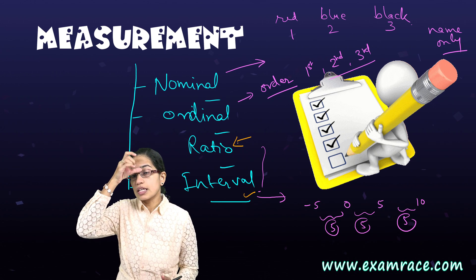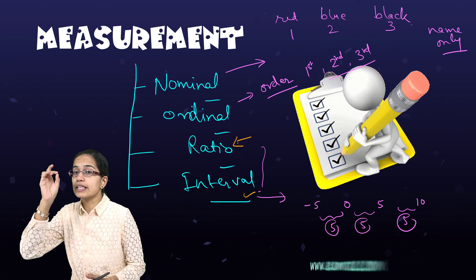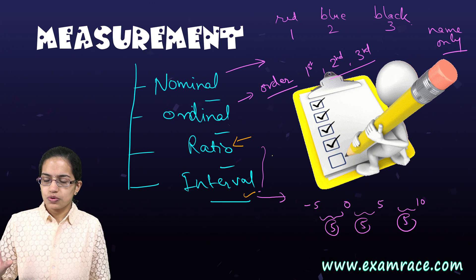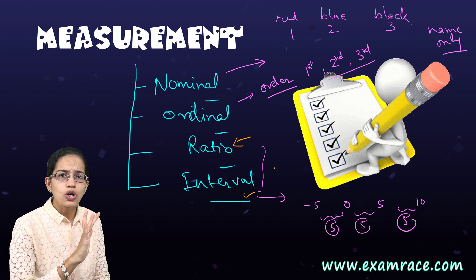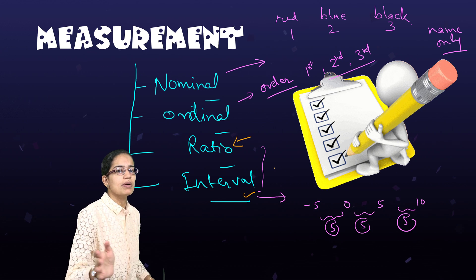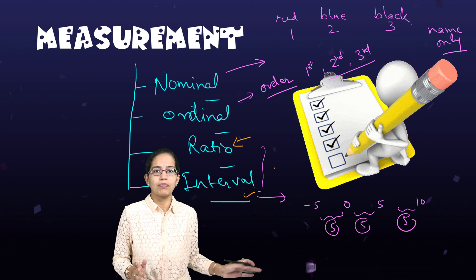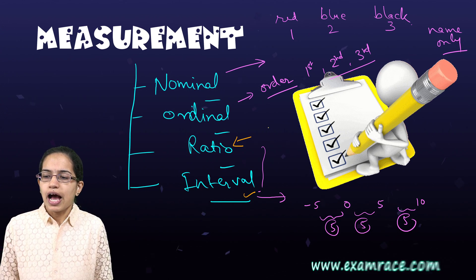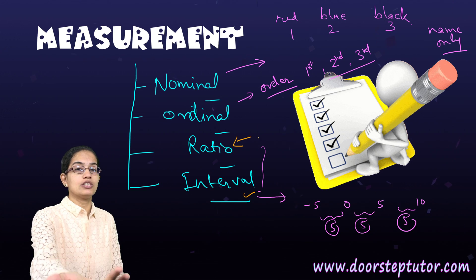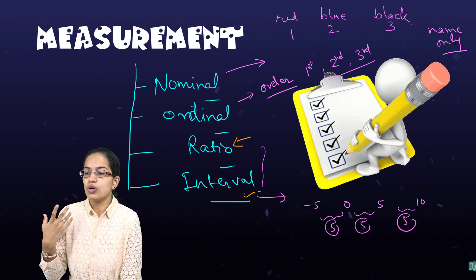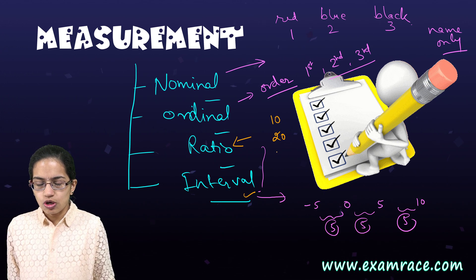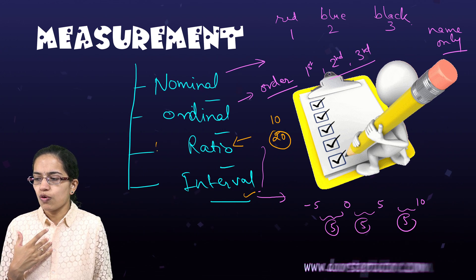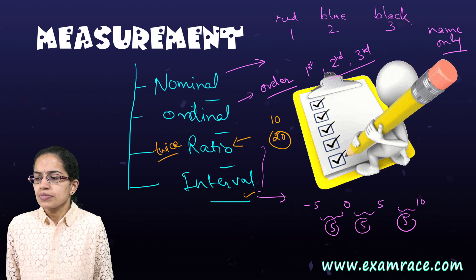But when it comes to ratio, the things become very different. Ratio means without any negative value, without any negative number. So what we are trying to do is simply we are ignorant about whether the number is on the negative side or the positive side. We are just comparing the quantity. So let's say I have twice as many chocolates as you. So let's say you have 10 chocolates, I have 20 chocolates. So the ratio of the chocolates with me is twice, and that is where we find about the ratio measurement.